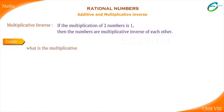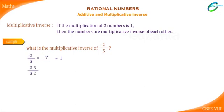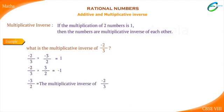What is the multiplicative inverse of minus 2 upon 3? Which number multiplied by minus 2 upon 3 gives us 1? If we multiply minus 2 upon 3 by 3 upon 2, we will get minus 1 and not 1. So, we need to multiply minus 2 upon 3 by minus 3 upon 2. So, minus 3 upon 2 is the multiplicative inverse of minus 2 upon 3.